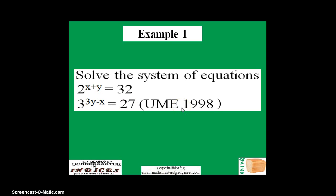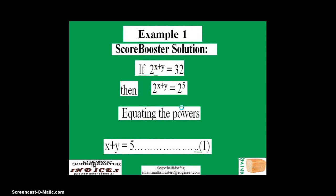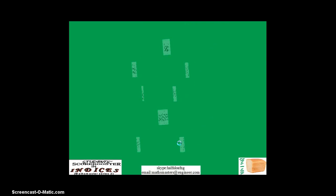The solution goes thus. This is the first equation that we are given. If 2 raised to power x plus y equals 32, by factorizing 32, we're going to have 2 raised to power x plus y equals 2 raised to power 5. Now that you have both bases being equal, we can equate the powers thus: x plus y equals 5. We're going to take this as our first equation.